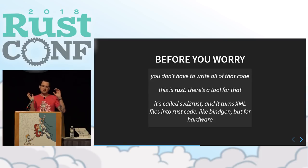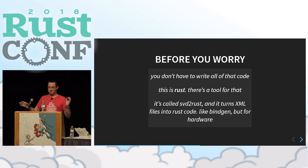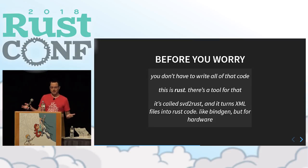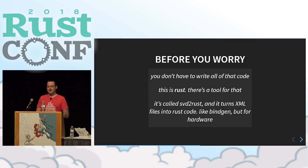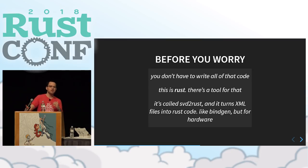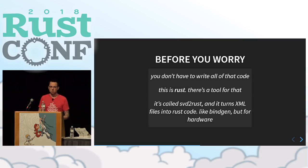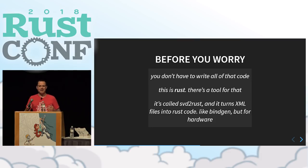Before you worry — all that stuff about writing registers looked like a lot of code, especially when you have to cover every feature of the microcontroller. But don't worry, this is Rust and it's 2018 — there's a tool for that. It's called SVD to Rust. It takes XML files provided by the manufacturer that have every register and every value, and it generates tens or hundreds of thousands of lines of usable Rust code, with comments and modules, nicely laid out. It's kind of like bindgen, but for hardware.